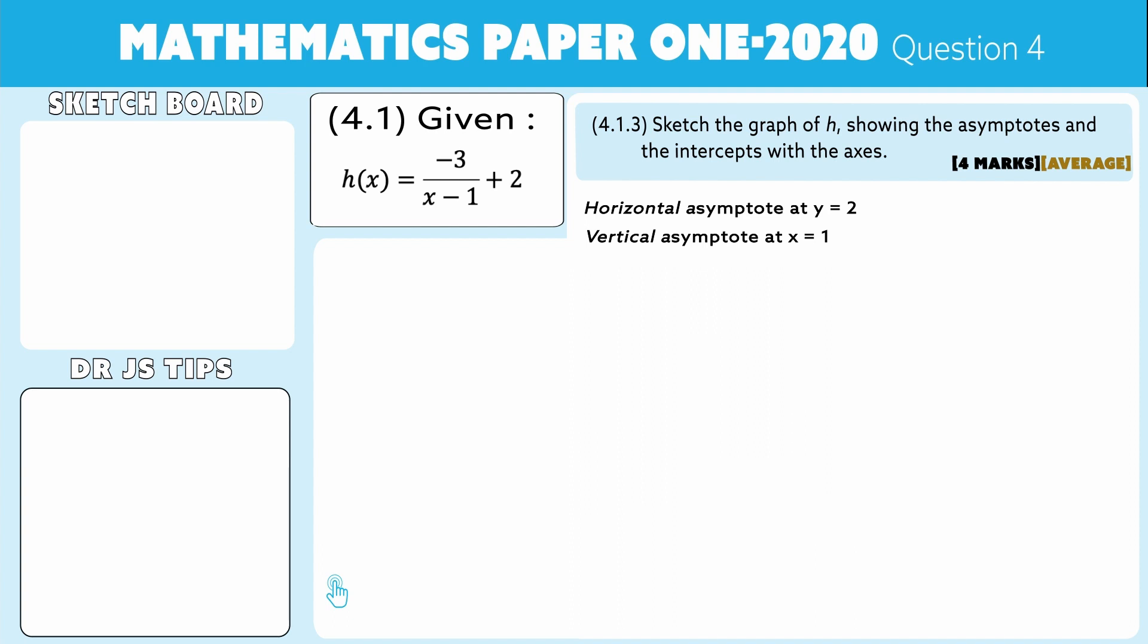Okay, so let us do that. We have our y-axis, we have our x-axis, and I'm just going to label them properly: 0 and x. I'm now going to change colour.